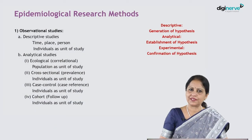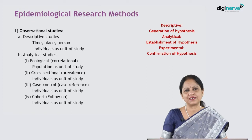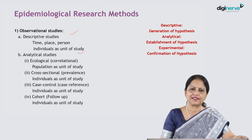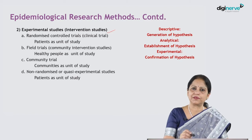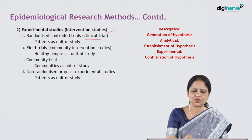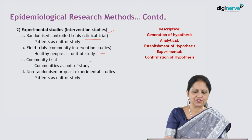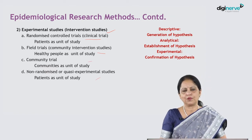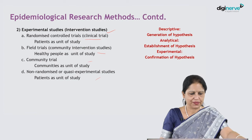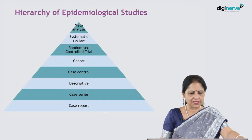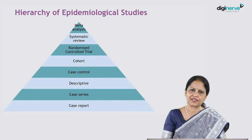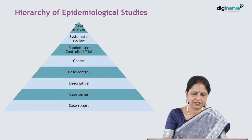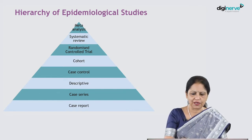Observational studies include descriptive and analytical studies. The third category is experimental studies — that is, randomized controlled clinical trials, field trials, community trials, and non-randomized or quasi-experimental studies. This is the hierarchy of epidemiological studies, where the randomized controlled trial lies at quite an upper rung of the hierarchy.